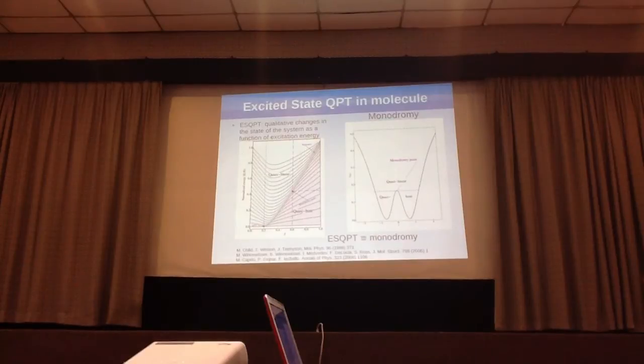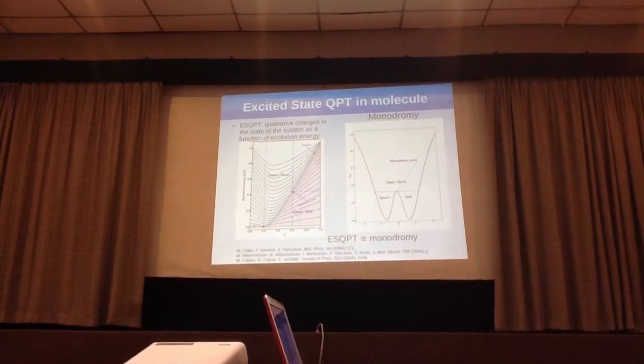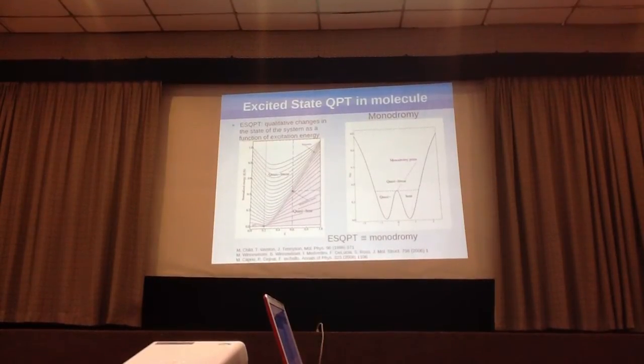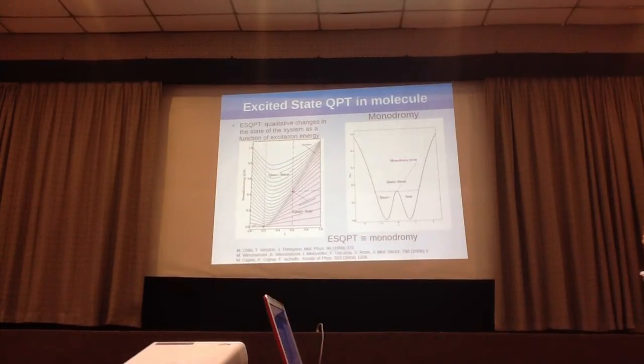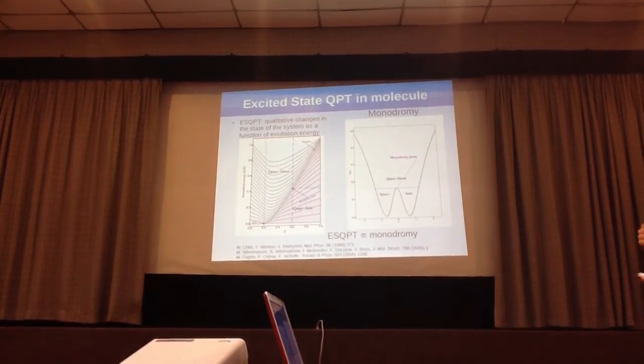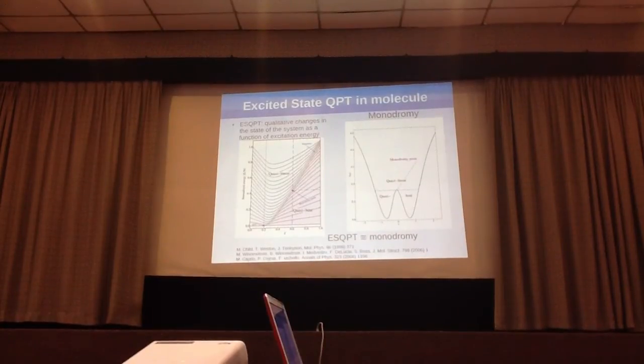Another way to look at it, more how the spectroscopist would look at it, is here on the right. This is just a Morse potential. It has the lowest energies here in the quasi-bent region.